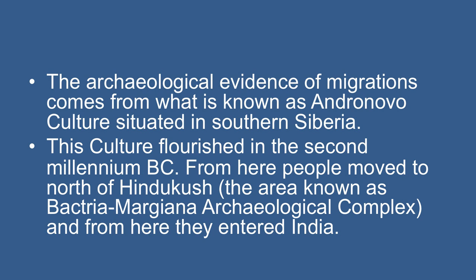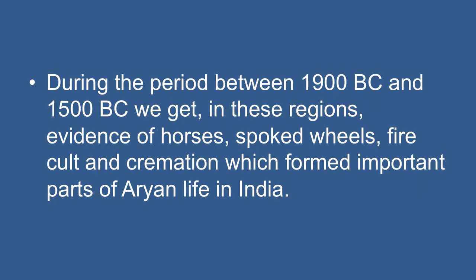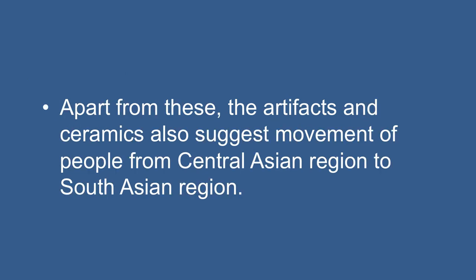The Andronovo culture flourished in the 2nd millennium BC. From here, people moved north of the Hindu Kush and entered India. During the period between 1900 BC and 1500 BC, we get evidences of horses, spoke wheels, fire cult, and cremations in these regions, which formed important parts of Aryan life in India. Apart from this, artifacts and ceramics also suggest movement of people from the Central Asia region to the South Asian region.